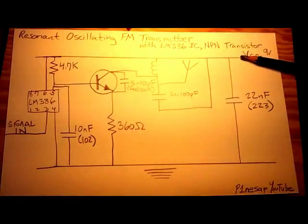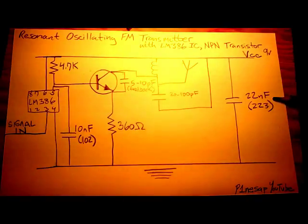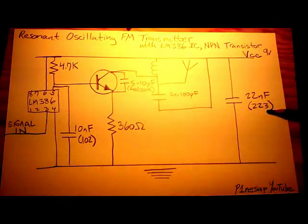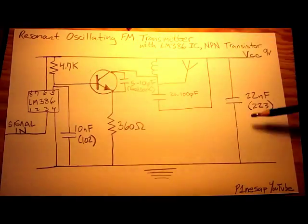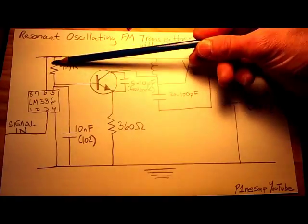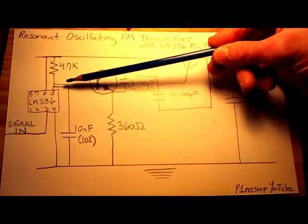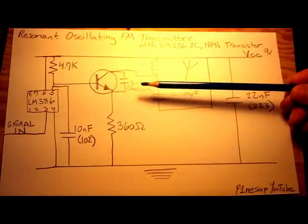And then again over here, we're connecting the positive rail to negative with a capacitor, the 22 nanofarad that's labeled 223. So this is where the oscillation is taking place in the circuit, is between here and here, interfacing with the base lead on the NPN transistor.